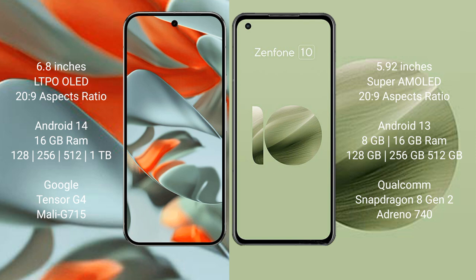The Google Pixel 9 Pro XL comes with 16GB RAM and 128GB, 256GB, 512GB, or 1TB internal storage options. It is powered by the Google Tensor G4 processor with Mali GPU.